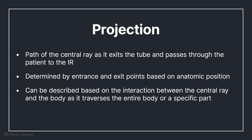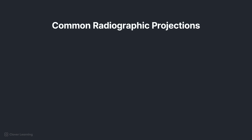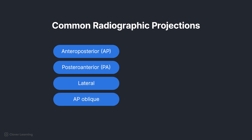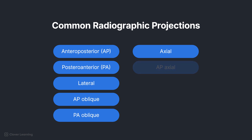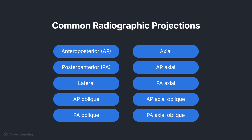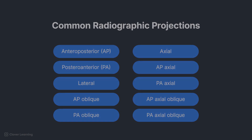Radiographic examinations are typically labeled based on their projection. Common radiographic projections include anteroposterior or AP, posteroanterior or PA, lateral, AP oblique, PA oblique, axial, AP axial, PA axial, AP axial oblique, and PA axial oblique. Let's take a brief look at each of these.